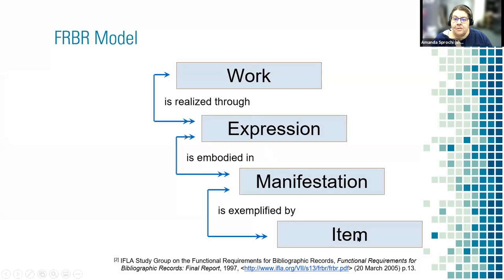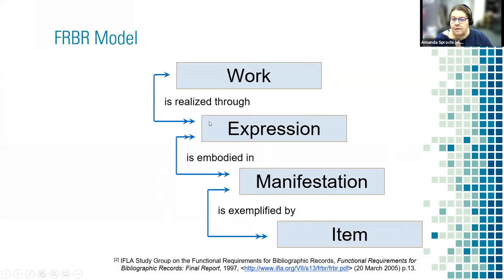So again, just a simplified version of the FRBR model — this is the kernel of RDA, and even the new RDA — is that you have a Work that's realized through an Expression that's embodied in a Manifestation and is exemplified by an Item. All of these basically work in tandem. A Work is realized through an Expression and an Expression realizes a Work — in the model, relationships are reciprocal.